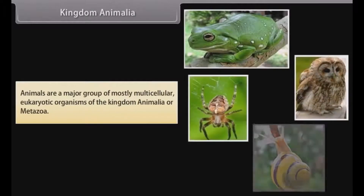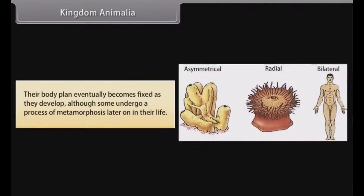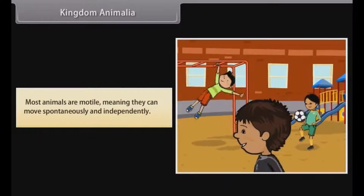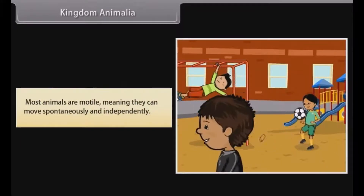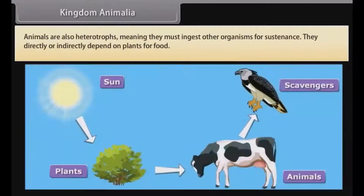Kingdom Animalia: Animals are a major group of mostly multicellular eukaryotic organisms of the kingdom Animalia or Metazoa. Their body plan eventually becomes fixed as they develop, although some undergo a process of metamorphosis later in their life. Most animals are motile, meaning they can move spontaneously and independently. Animals are also heterotrophs, meaning they must ingest other organisms for sustenance.